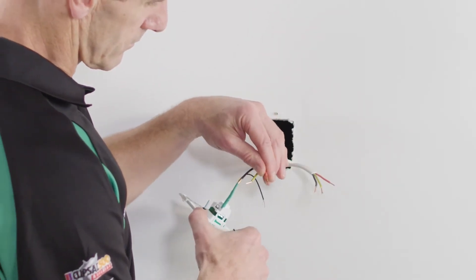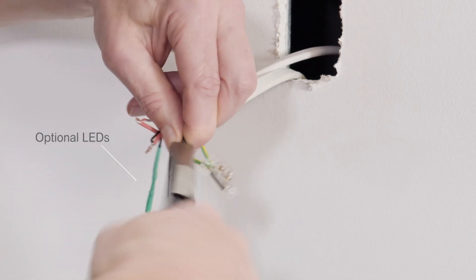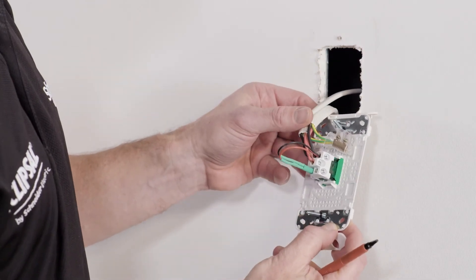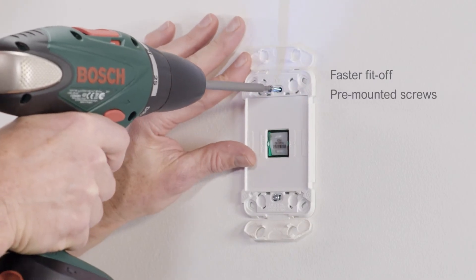Fitting off switches is super quick too. Just wire in the LEDs and terminate. Then fit off faster with the pre-mounted screws.